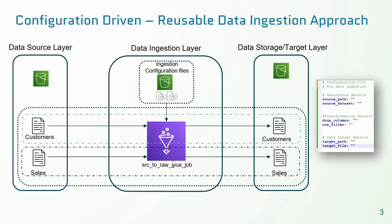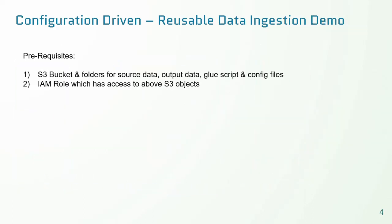The Glue job reads the config file and understands where the source is residing, fetches the content into a data frame, then identifies what transformations to apply on top of the data frame and applies those transformations. Finally it gets the target details, stores the data in the format-specific file. This is the approach we can follow to come up with a reusable data pipeline to load similar files with varying transformations. Let us get into a quick demo.